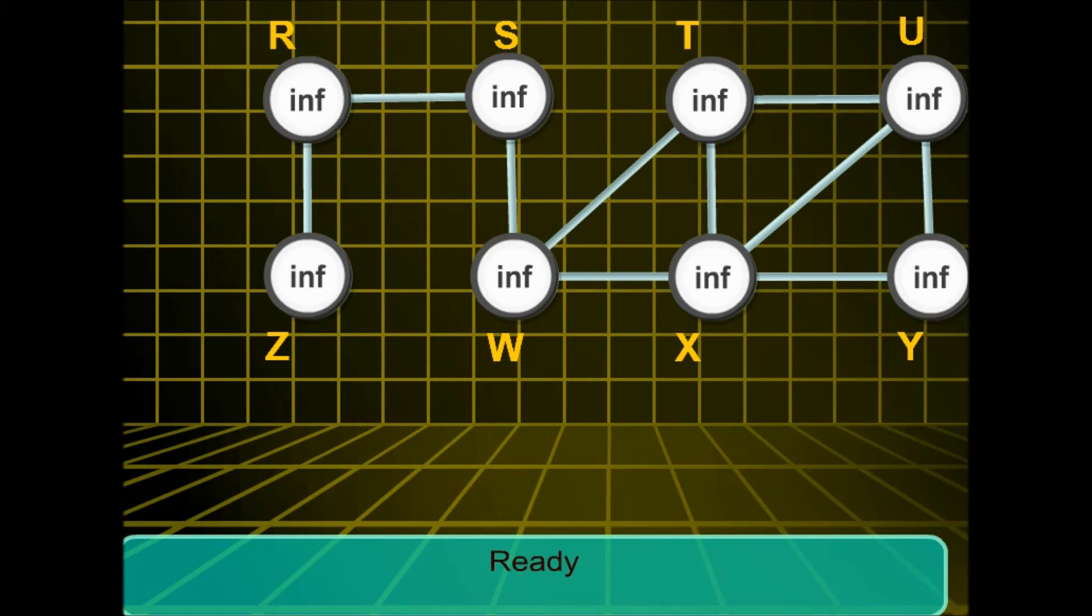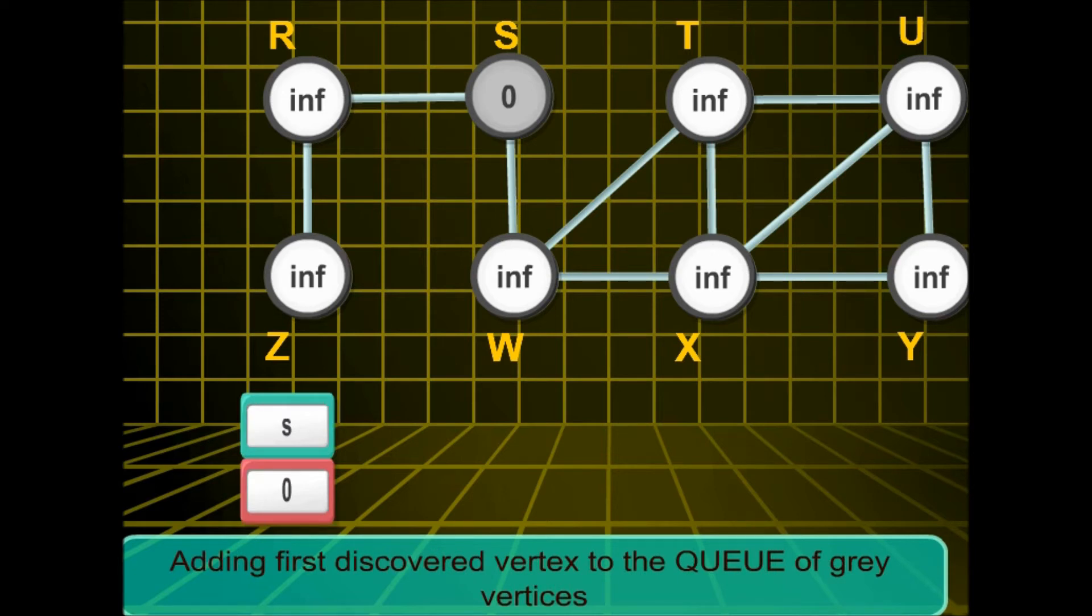In the very beginning, all the nodes are marked with distance infinity. Then we start at the root node s and its distance is set to be 0. Now we color it grey and enqueue it.